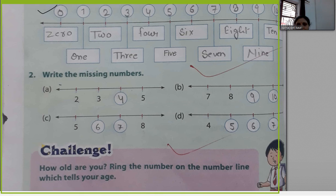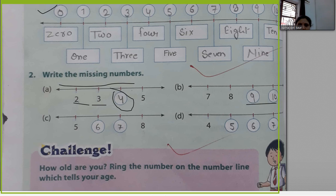Write the missing numbers. Two and three are given — find what is missing. Seven and eight are given — nine and ten are missing. Five and six are given — seven is missing. Four is given — five, six, seven are missing. Fill in the blanks in your book yourself.